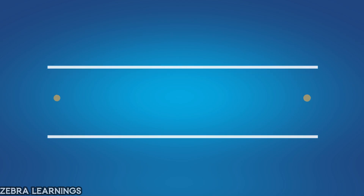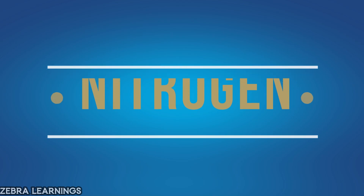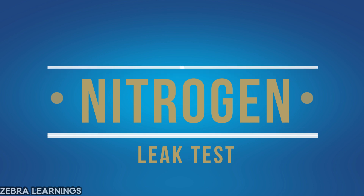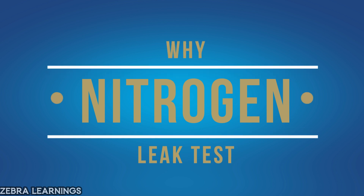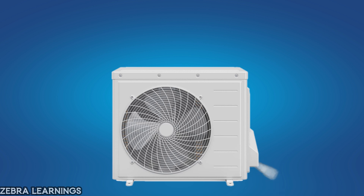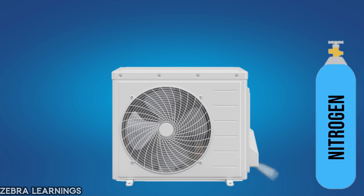In this video, we are going to learn how to check for refrigerant leaks in an AC unit using nitrogen gas. When a refrigerant leak occurs in a unit, it is not always possible to identify the exact location of the leak using traditional methods. In such cases, the nitrogen leak testing method can be employed to pinpoint the source of the leak.